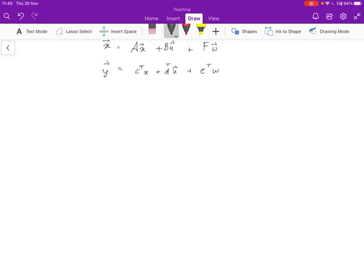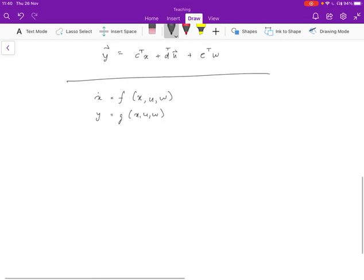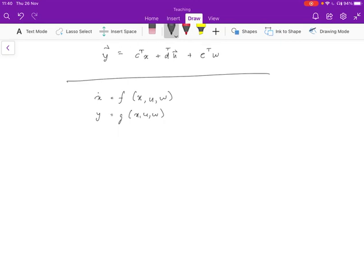And if you look at a more general case where we have non-linear systems, then we would say x dot is some function f of x, the prior state, the input u, and w, the disturbance, and y is given by some function g of x, u, and w. So that's the most general form we can write it, where f and g are arbitrary non-linear functions.